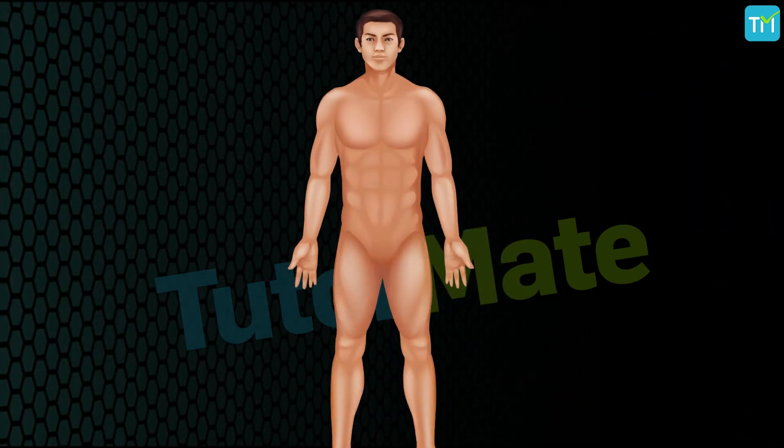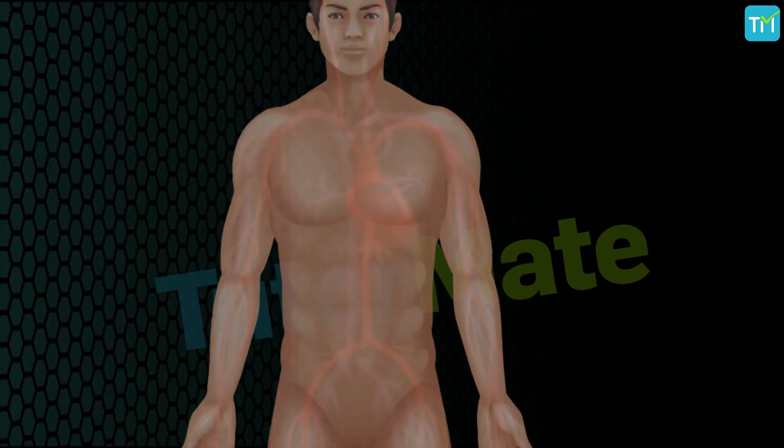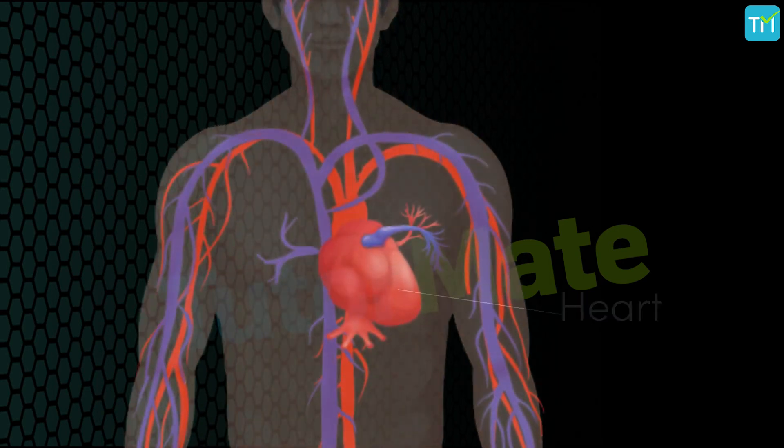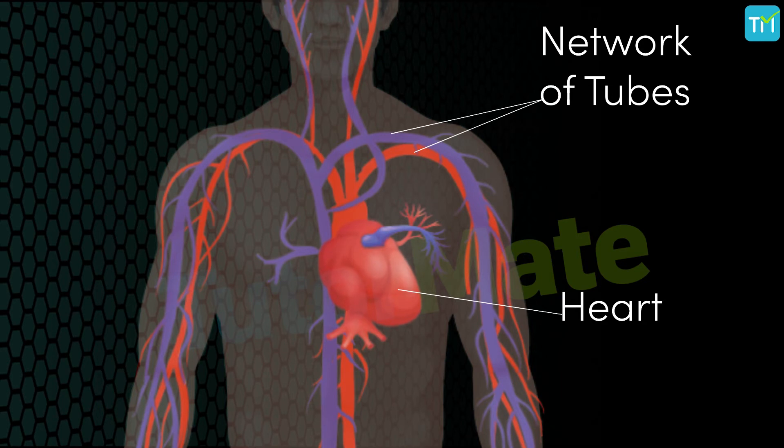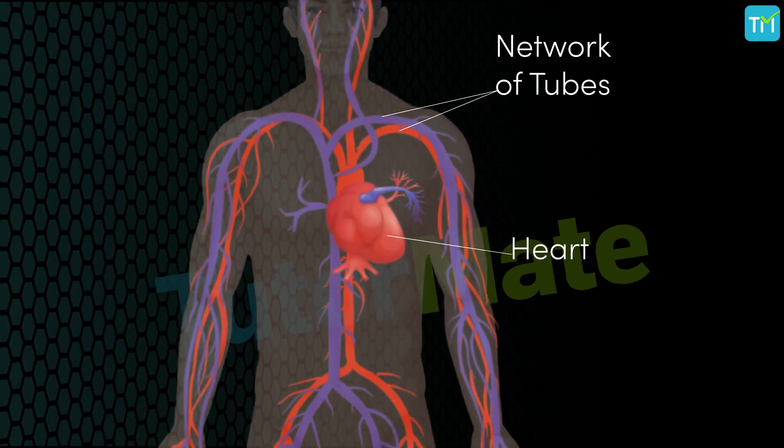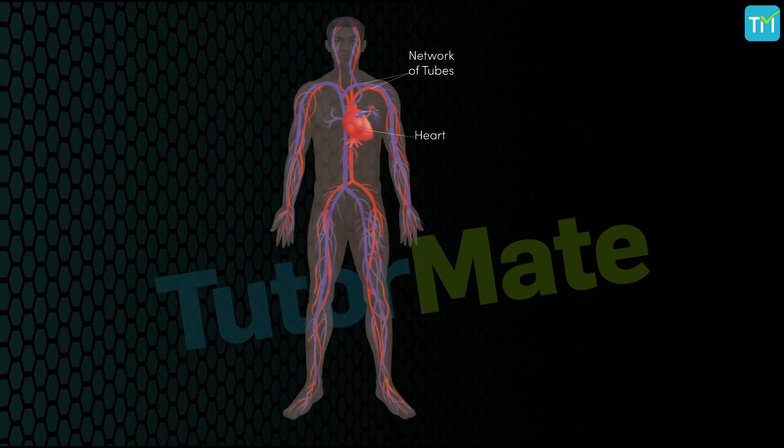Now in order to circulate blood all around the body, our body has a pumping organ, that is the heart, a network of tubes to reach all the tissues, and a system in place to ensure that this network can be repaired if damaged. And all these organs and network combined form our transport system.